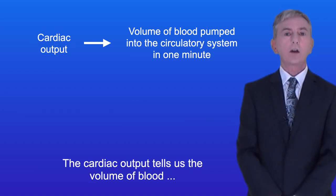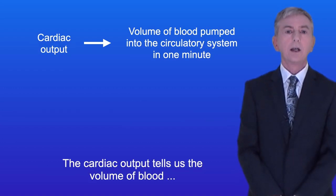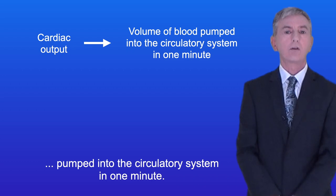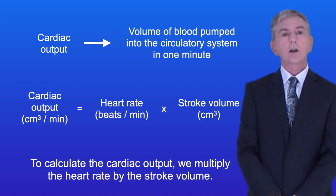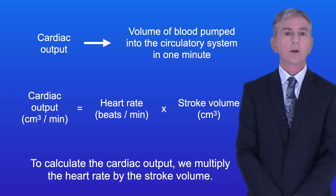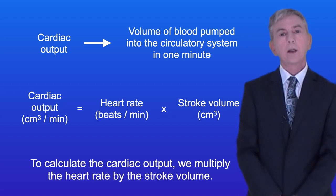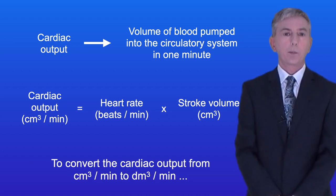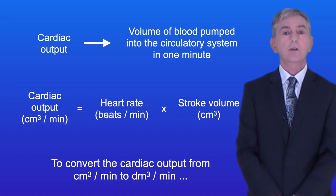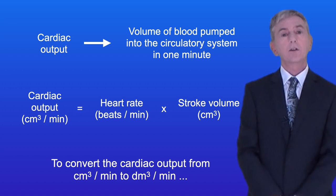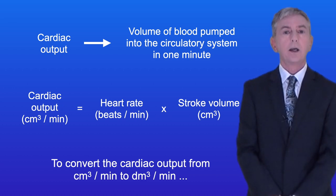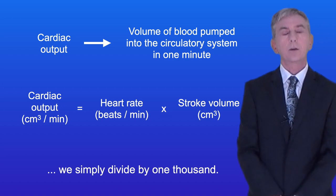The cardiac output tells us the volume of blood pumped into the circulatory system in one minute. To calculate the cardiac output we multiply the heart rate by the stroke volume. To convert the cardiac output from centimeters cubed per minute to decimeters cubed per minute, we simply divide by 1000.